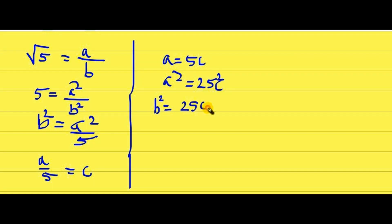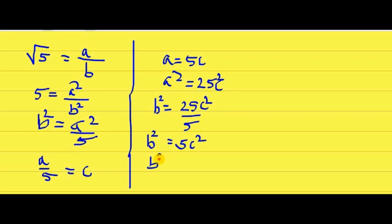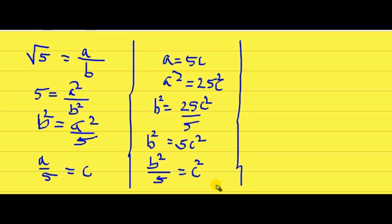So you will get b² = 5c². This means the value of b² is equal to 5c², and if you take 5 to the left hand side you get b²/5 = c². So 5 is the factor of b², which means b is also divisible by 5. So both a and b are divisible by 5, meaning a and b cannot be co-prime numbers — they do have a common factor, which is 5. Therefore our supposition is wrong. That supposition was that √5 was not an irrational number. So √5 must be an irrational number.